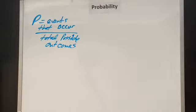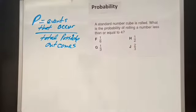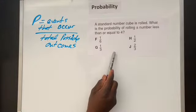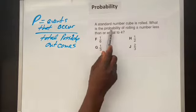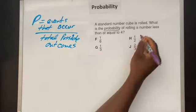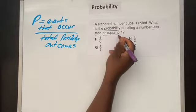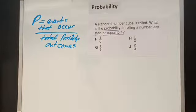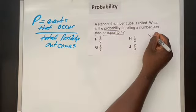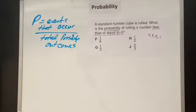So let's go ahead and start with this particular word problem here. It says a standard number cube is rolled. What is the probability, that's the word we're looking for here, that's our keyword. What is the probability of rolling a number that is less than or equal to four? When you think about that, you think of the numbers that are less than or equal to four on a number cube. We're talking about either four, three, two, or one on a number cube.